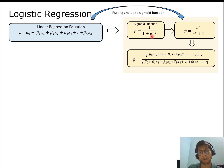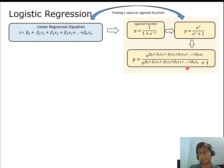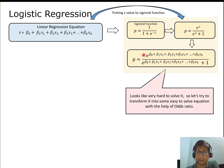Now let's see how we use the sigmoid function to transform linear regression. Solving further, p = e^z / (e^z + 1), where z is the linear equation. Substituting z gives p = e^(β₀ + β₁x₁ + … + βₖxₖ) / (e^(β₀ + β₁x₁ + … + βₖxₖ) + 1). This is still the sigmoid in terms of probability p. However, this is a very complex equation that is hard to solve directly.